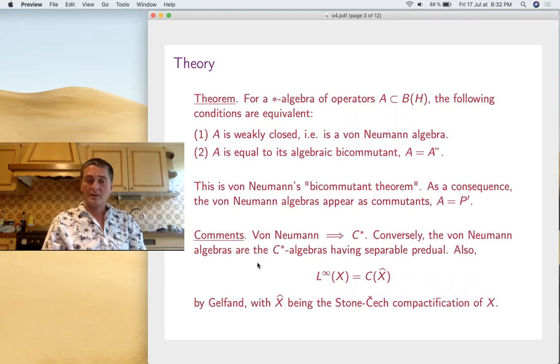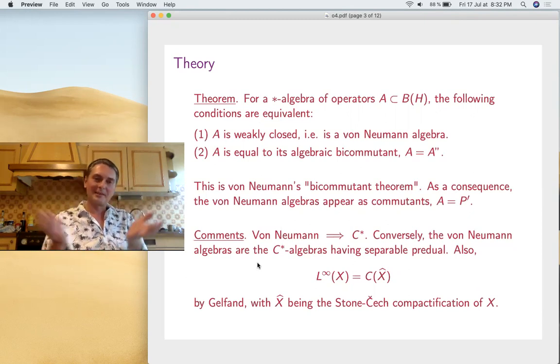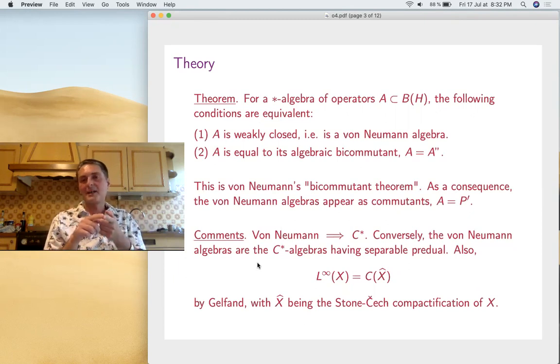Now, a few more comments about the relation between C* and Von Neumann. Von Neumann implies C*. Conversely, we can locate inside C* algebra the Von Neumann Algebras. These are those having a separable predual. Also, L^∞(X) is a commutative C* algebra, so you can apply Gelfand, right? So it's going to be C(X̂), X̂ being some kind of compactification. There's this Stone-Čech compactification. So you see, there's some subtle functional analysis in all this.